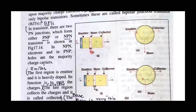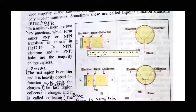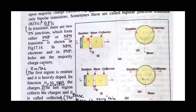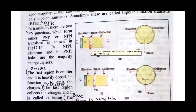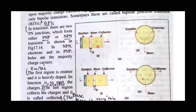The base is common to both junctions and is kept very thin. This ensures that every electron ejected by the emitter, driven by the battery source signal, will diffuse towards the base. Because the base is very thin and has very few electrons, most carriers continue to move towards the collector.